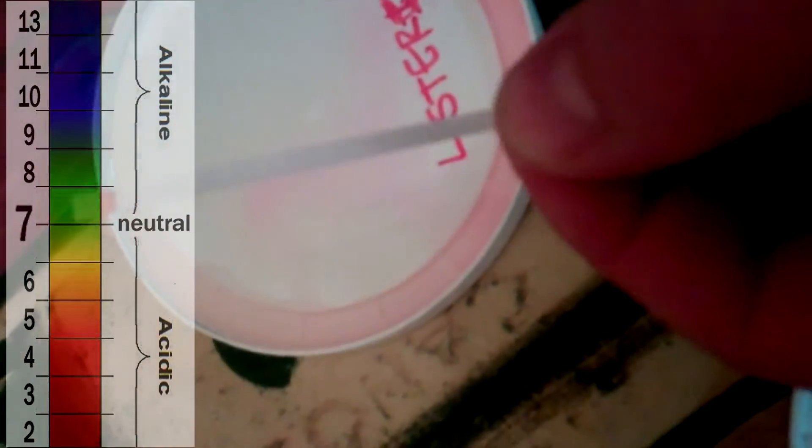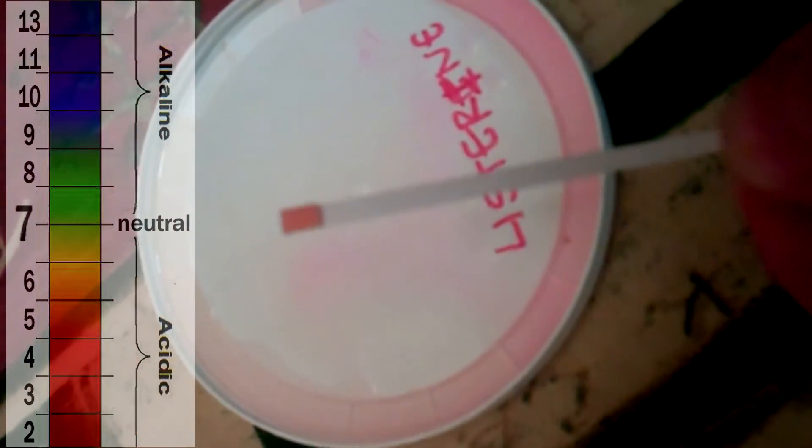And then we came over here with Listerine that is supposed to be so beneficial for your teeth. And you can see that it's actually quite acidic. It's probably about a 6.3 or something. It's a little brighter than that.